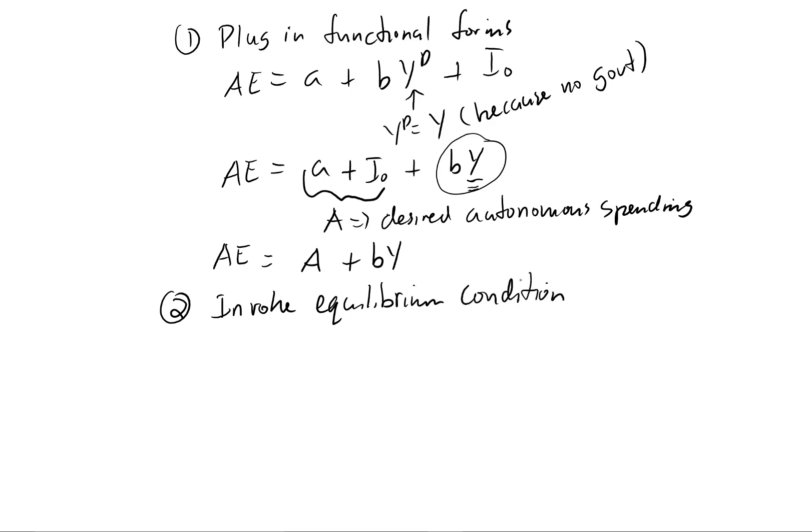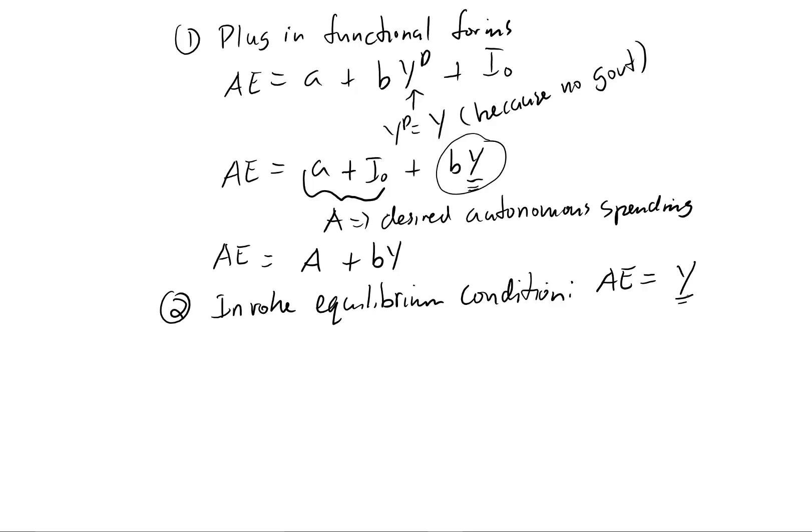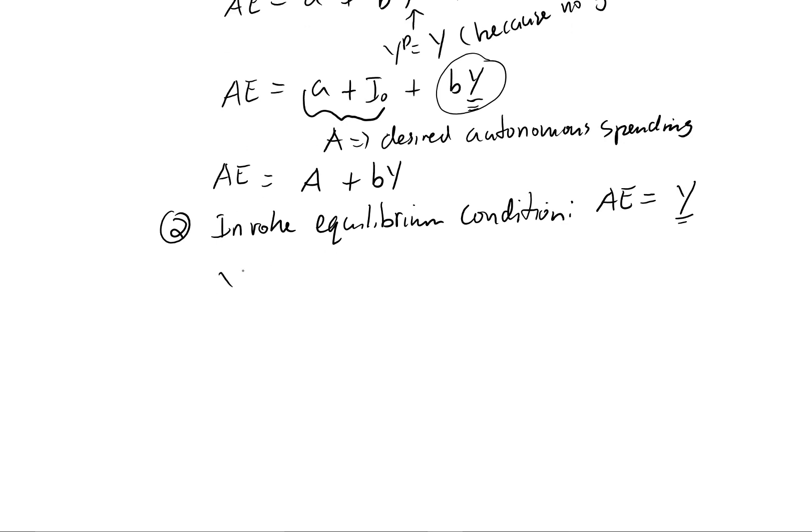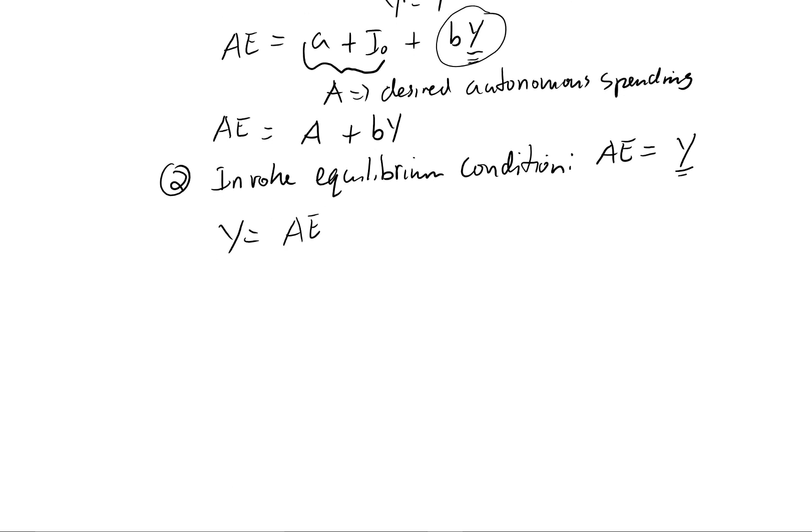And so remember from the text, our equilibrium condition is that our desired aggregate expenditure is equal to our actual. So Y here is the actual, so desired equals the actual. It's the only time we can be in equilibrium. Okay, so we have our equilibrium condition. So let's just rewrite it again. And I'm just going to say Y equals AE. So it'll be a little easier to work with here.